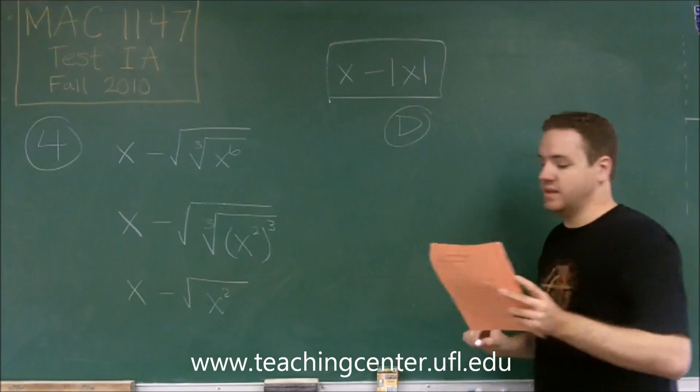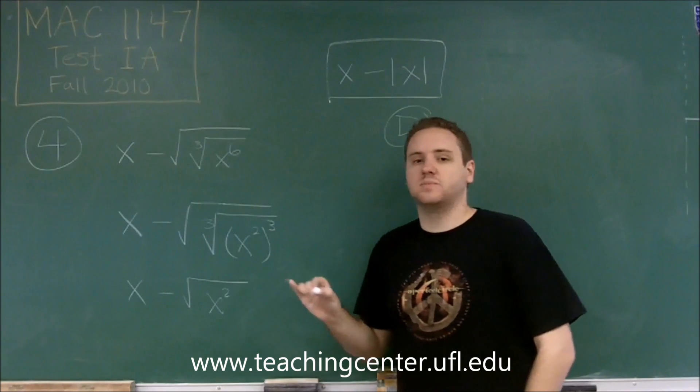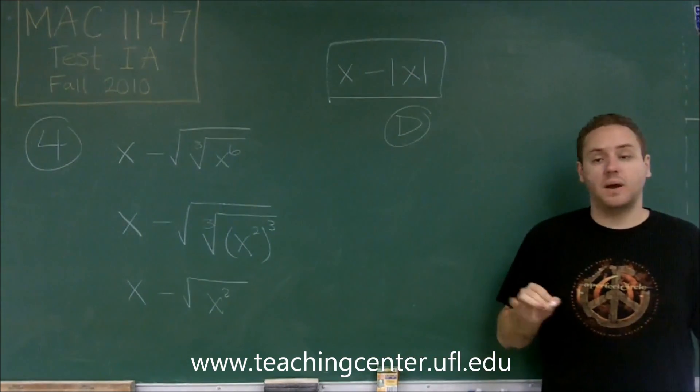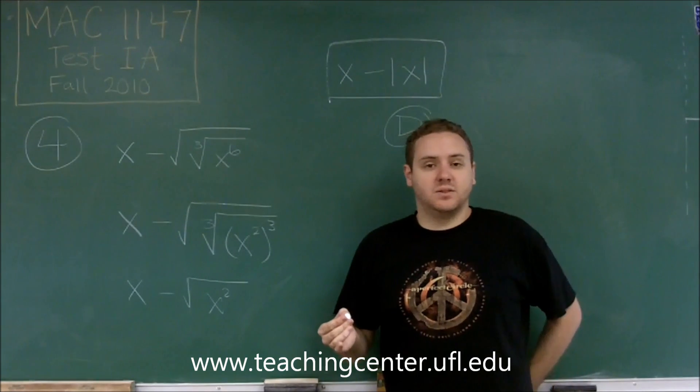So we can simplify that to x minus absolute value of x, which is answer choice D on your paper. So be careful. Now with this one we were allowed to just get rid of this because it was an odd root and an odd power.